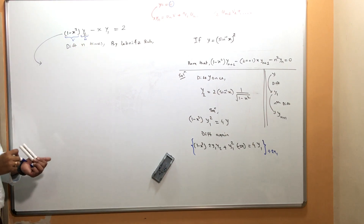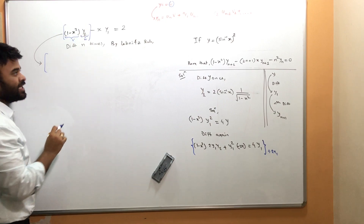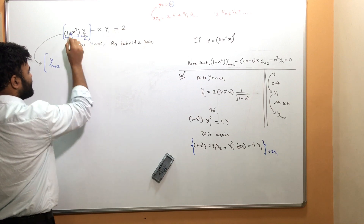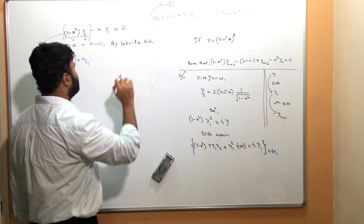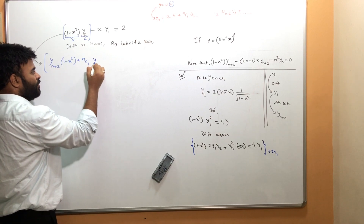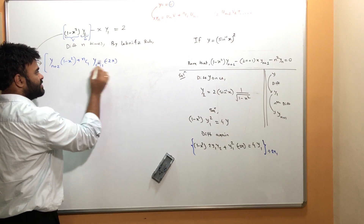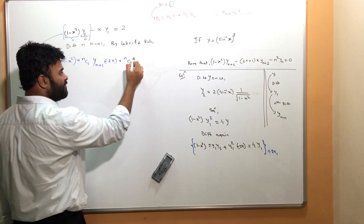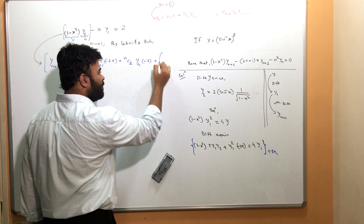Applying Leibniz rule to the first term (1-x²)·y₂: the nth derivative of y₂ is y_{n+2}, and v = (1-x²) stays. The second term is nC1·y_{n+1}·(-2x). The third term is nC2·y_n·(-2), and the next term is zero because the third derivative of (1-x²) is zero.